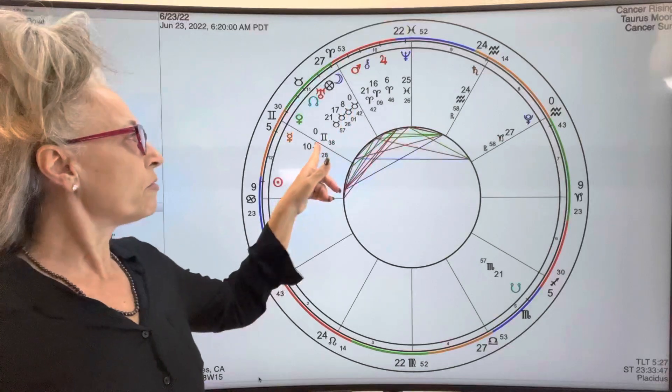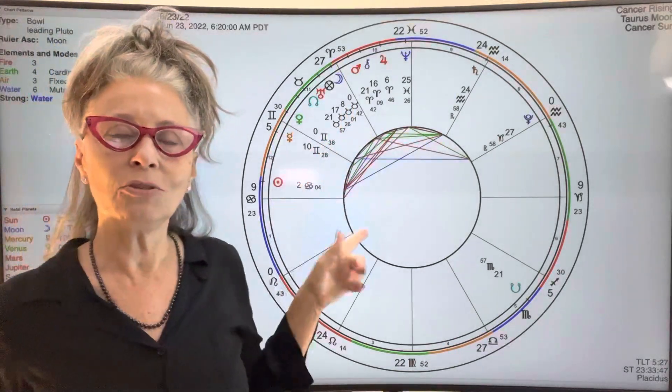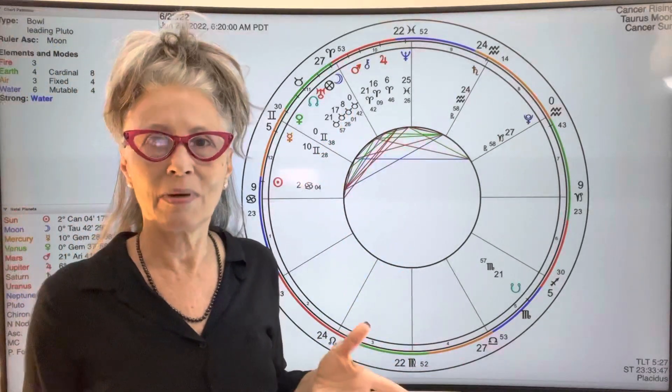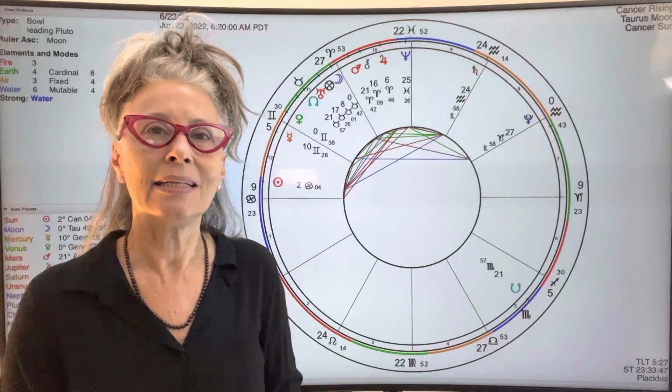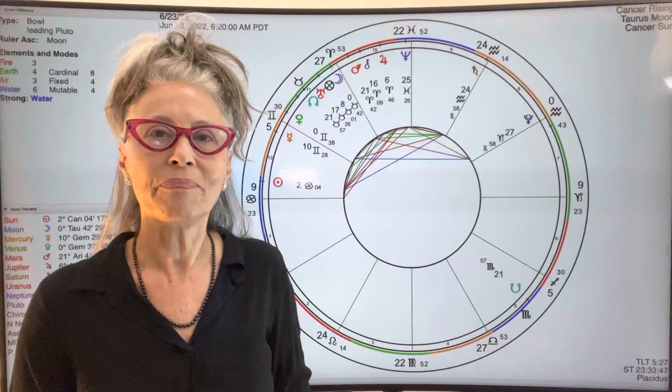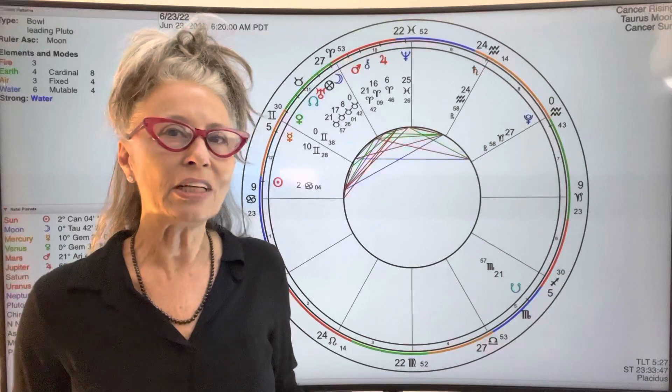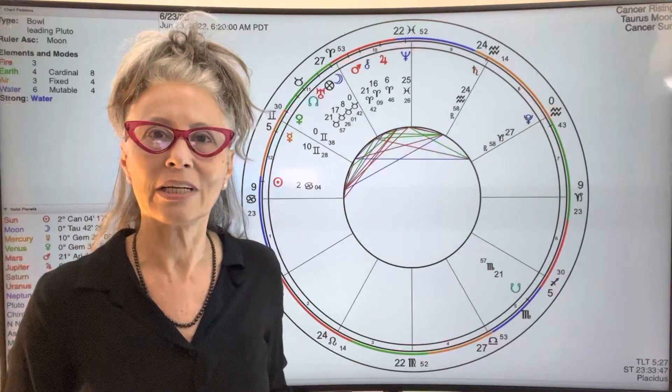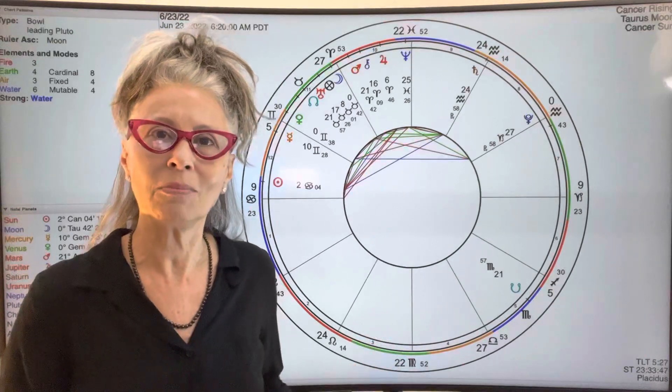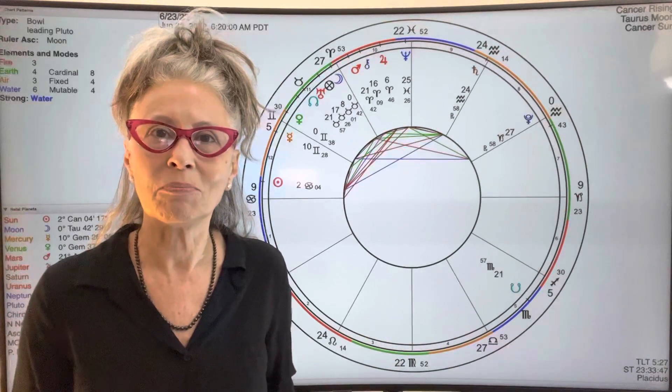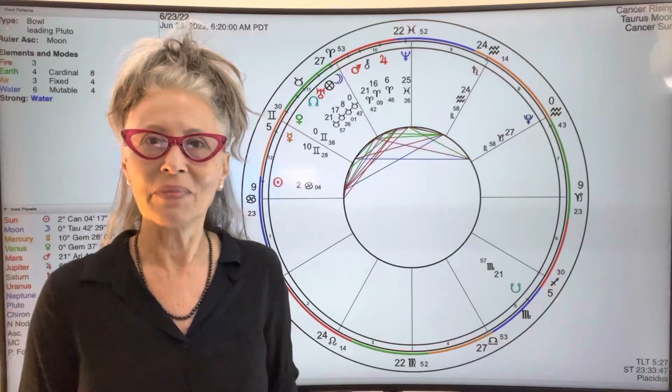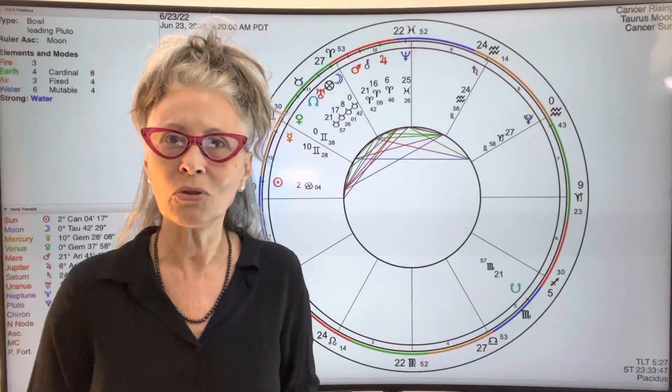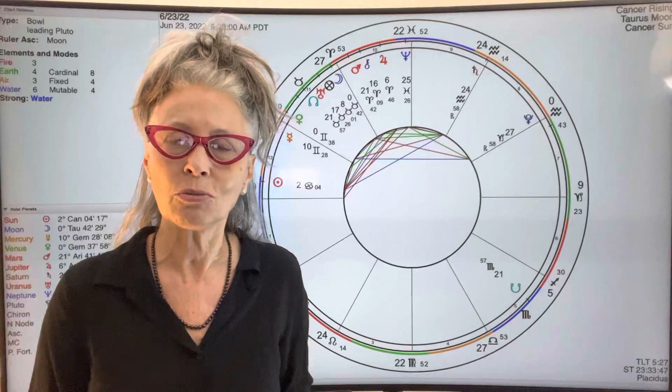So the ruler Venus, she moved into Gemini and she'll spend around a month in Gemini. Now Venus in Gemini, she is very talkative. She wants information, she wants to be social. It's the summertime in the Northern Hemisphere and Venus wants to go out and play and have a good time. So do that, it's time to connect with people, it's time to be sociable.